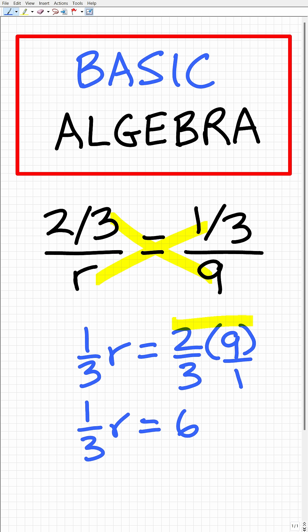So how do we solve for r? Well, the easiest way is to multiply both sides of the equation by 3, because 3 times one-third r is r, and then 6 times 3 is 18. So r equals 18 is the solution to this equation.